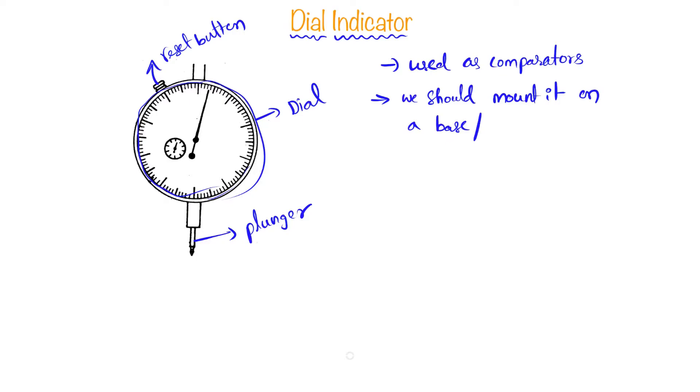The accuracy that we can achieve with this dial indicator is up to 0.001 mm. So this is a little bit about dial indicators. Let's see what is the construction of these dial indicators.